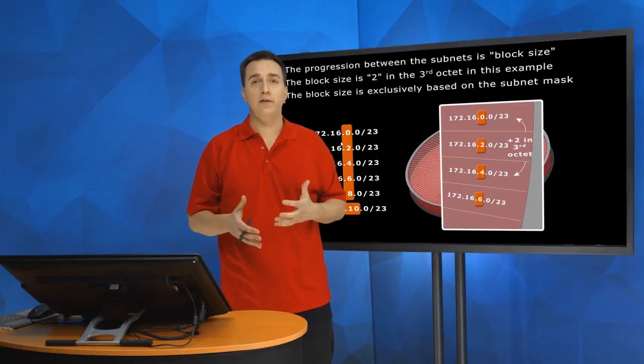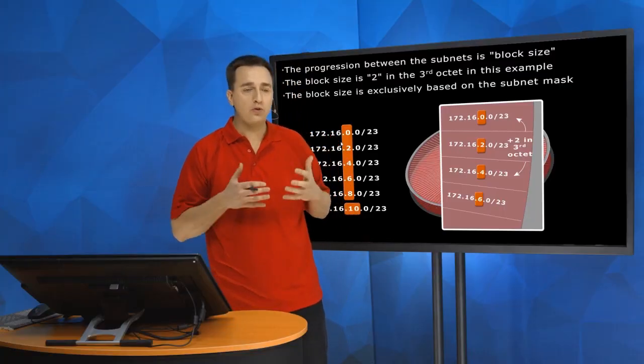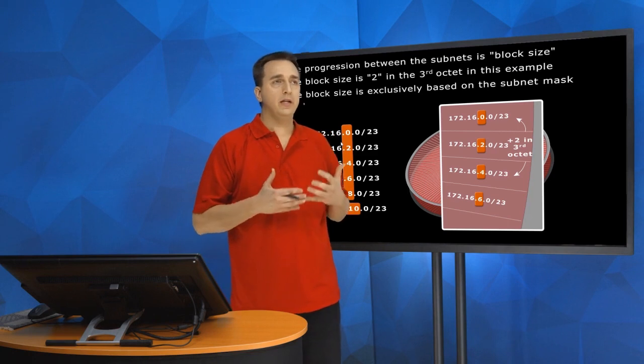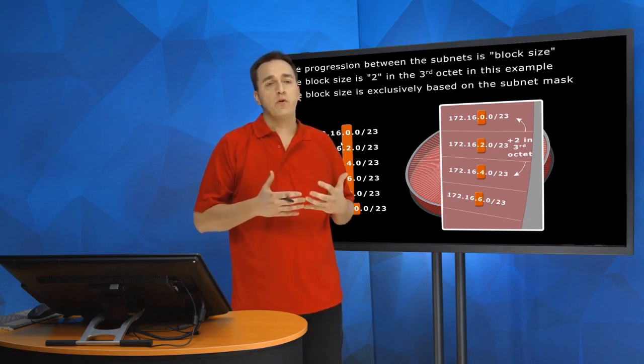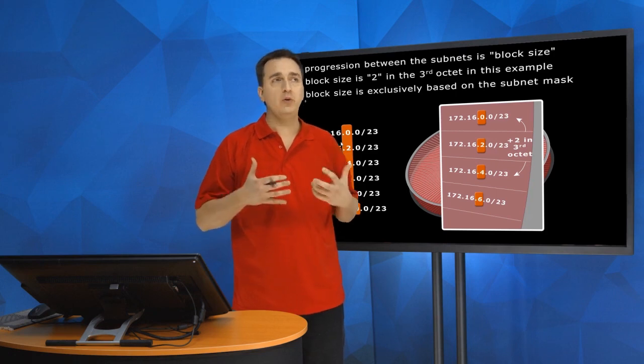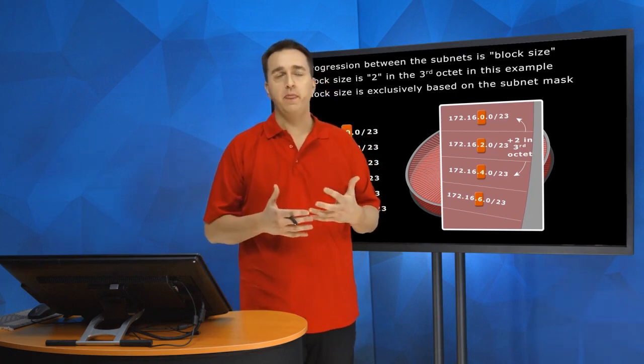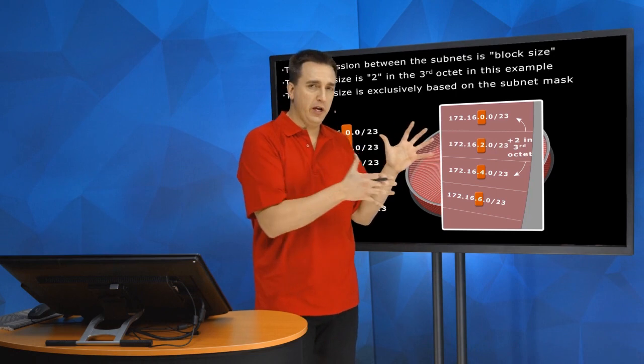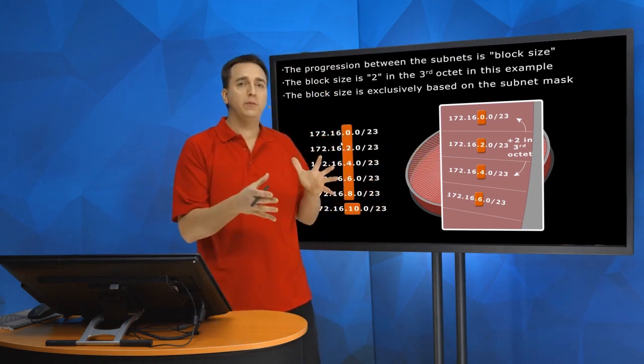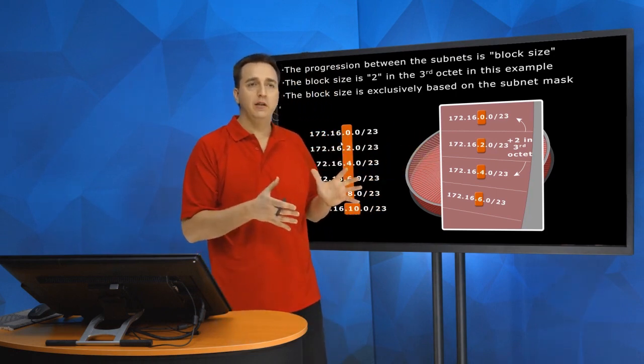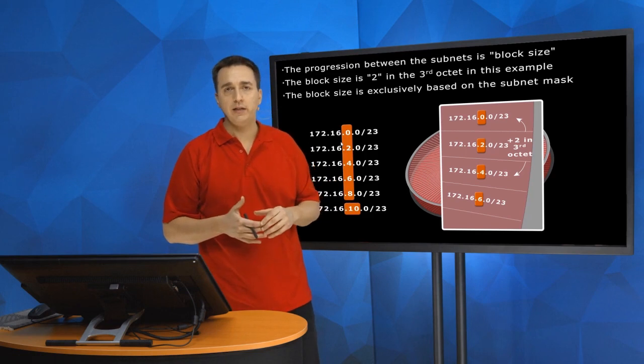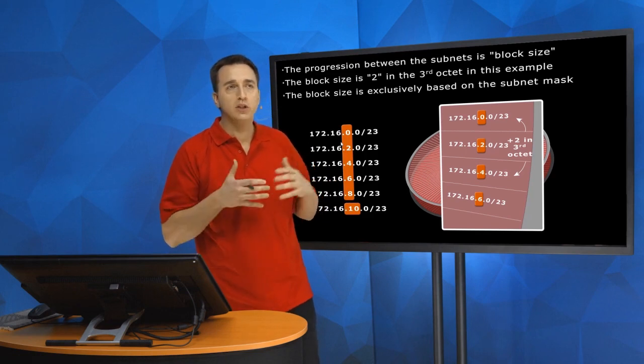Well, before I show you how to figure that out, what we're truly doing here is we are trying to find the progression of numbers between each of the subnet IDs. So in this particular scenario here, what is the progression between the different subnet IDs? What's the progression?